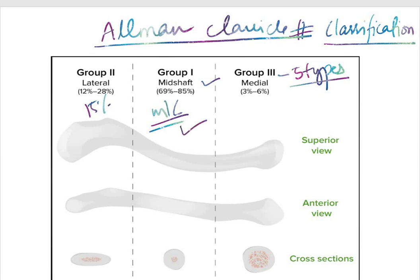Group 1 is 85%, Group 2 is 15% only. Group 1 is mid shaft clavicle fracture. Group 2 is distal one third or the lateral one third clavicle fracture.